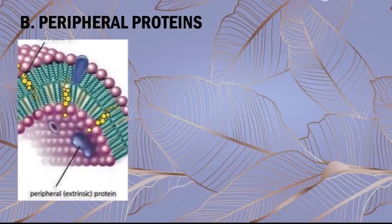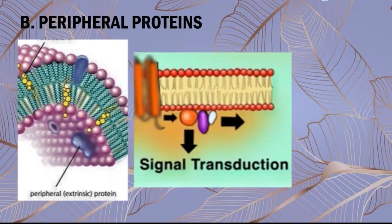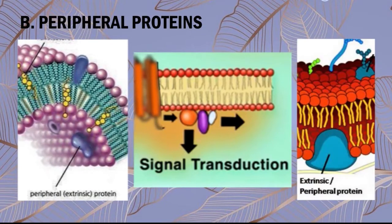Peripheral proteins can have an assortment of functions, such as acting as enzymes to speed up reactions, or they can attach to cytoskeleton structures to help with cell shape. Using the scratch paper and glue, we just have to create small blobs or lumps.